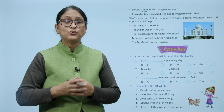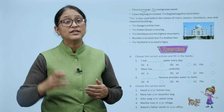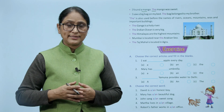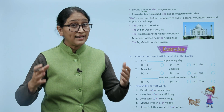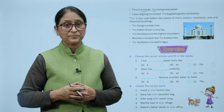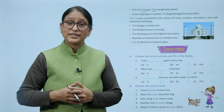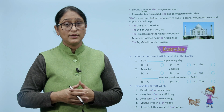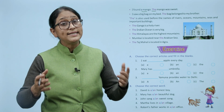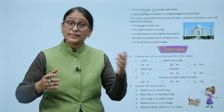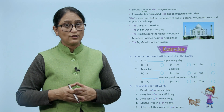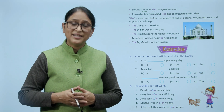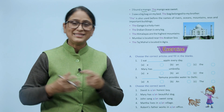The is also used before the names of rivers, oceans, mountains, seas and important buildings. The Ganga is a holy river. The Indian Ocean is very big. The Himalayas are the highest mountains. Mumbai is located near the Arabian Sea. The Taj Mahal is located in Agra. I hope you have understood it. Now it's time to revise. You can revise it.